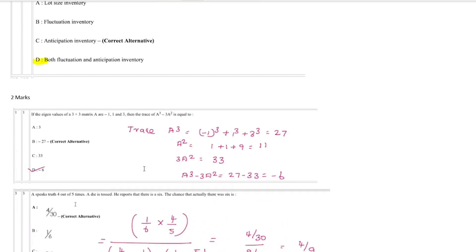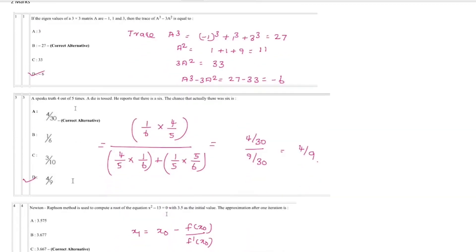If we look at the two mark questions, all questions are correct. The first one is the eigenvalue question, minus 6 is correct. The Bayes theorem is 4 by 9, so that is changed.